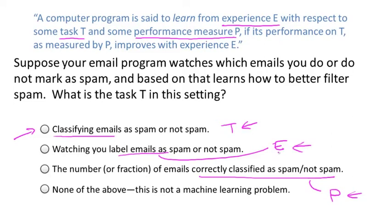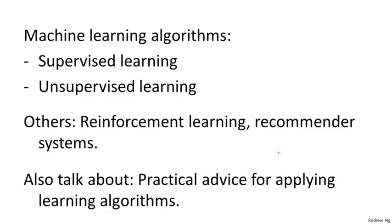In this class, I hope to teach you about various different types of learning algorithms. The main two types are what we call supervised learning and unsupervised learning. In supervised learning, the idea is we're going to teach the computer how to do something, whereas in unsupervised learning, we're going to let it learn by itself. Other buzz terms include reinforcement learning and recommender systems, but the two most used types are probably supervised learning and unsupervised learning, and we'll spend most of this class talking about these two.